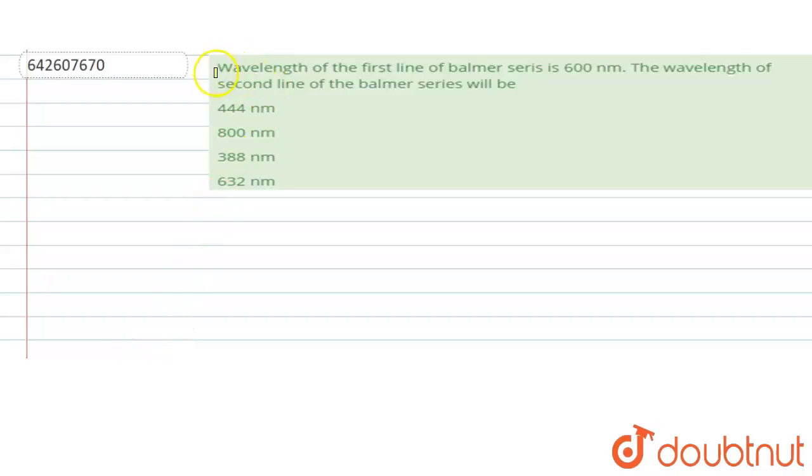Hello, the problem states that wavelength of the first line of the Balmer series is 600 nanometer. We have to find the wavelength of the second line of the Balmer series.